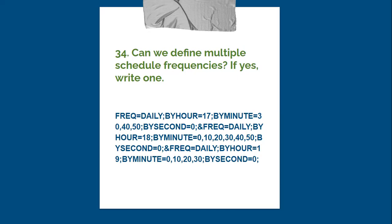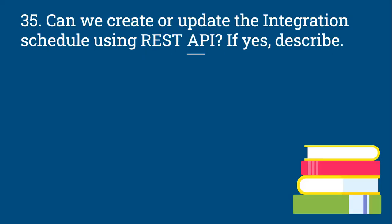This is just an example, but in real-time we will face such situations and multiple schedule frequencies will be very helpful. By using the ampersand we can define multiple schedule frequencies in OIC. Question 35: Can we create or update the integration schedule using REST API? Yes, we can. Normally we log into the OIC instance, select the integration, go to schedule, and configure it — but REST API can also be used to create or update the integration schedule.